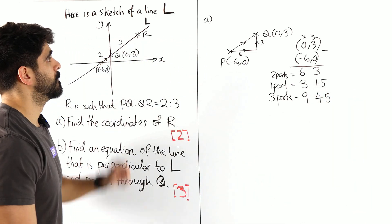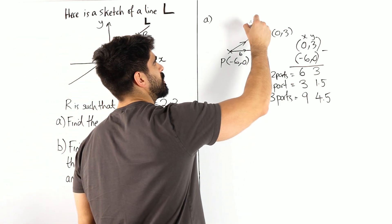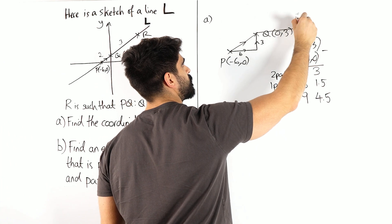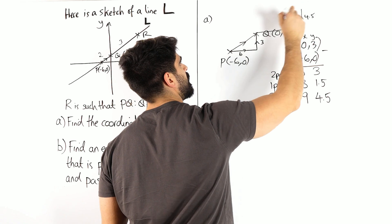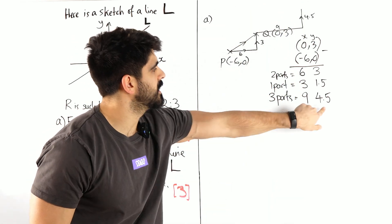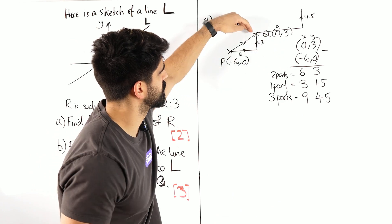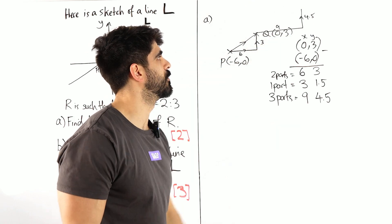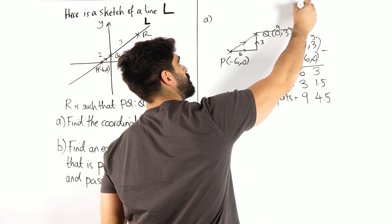Now that's from Q. So from Q we're going to go 9 across and 4.5 up. So we're going 9 across, 4.5 up. Now remember these are being added to this because we're going 9 across, 9 plus 0 is 9, then you're doing 3 plus 4.5.